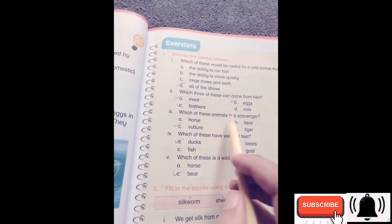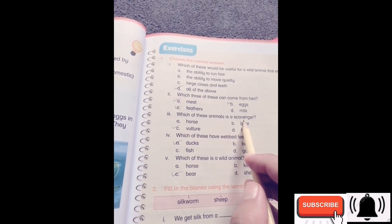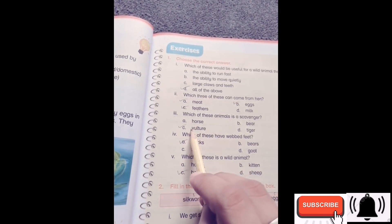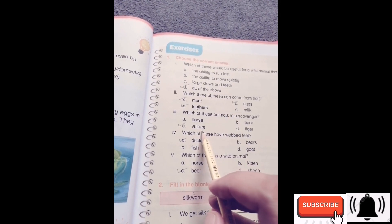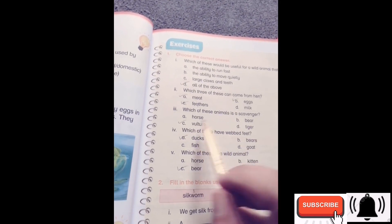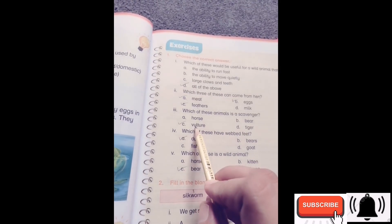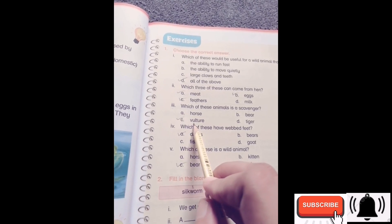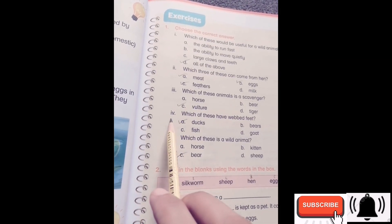Which of these animals is a scavenger? We have options: horse, bear, vulture, tiger. Correct option is option C, vulture. Number four, which of these has webbed feet?